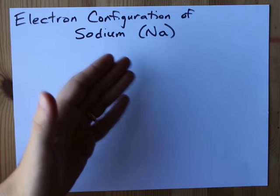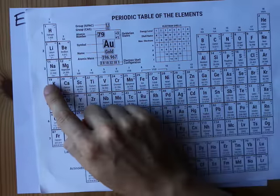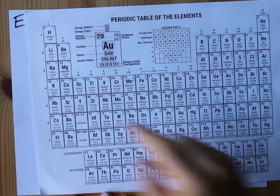The electron configuration of sodium is pretty straightforward. If you find sodium on the periodic table, it is here in the third row and first column.